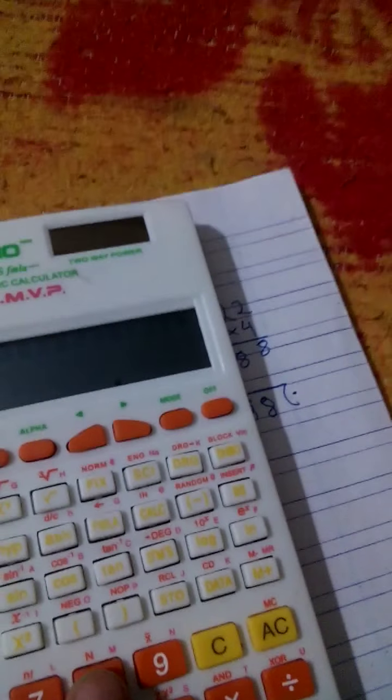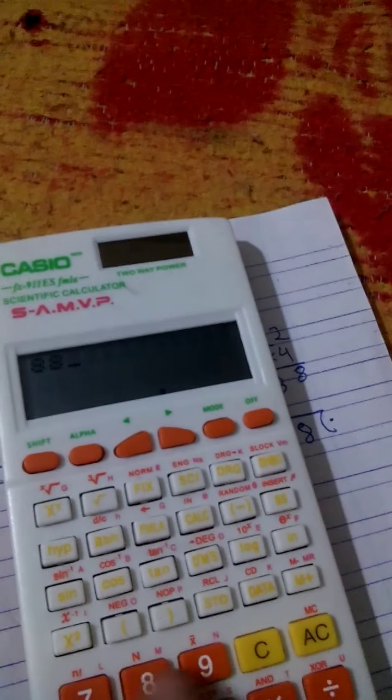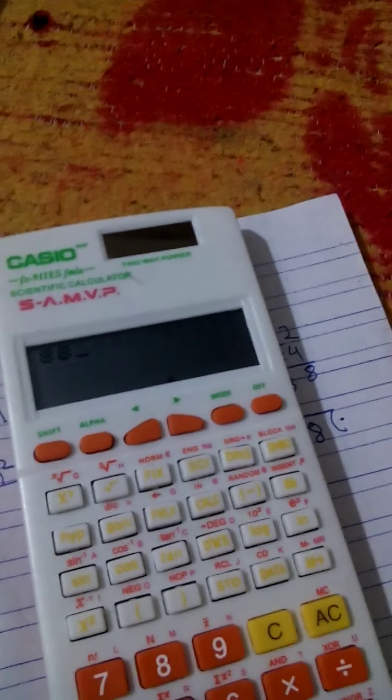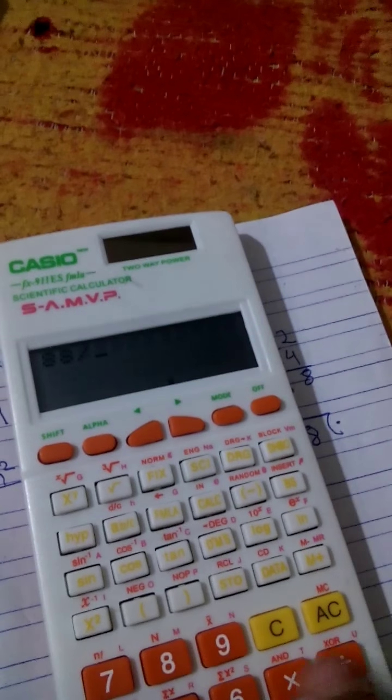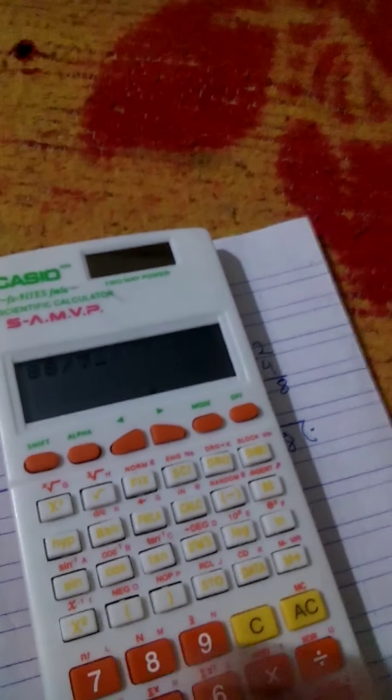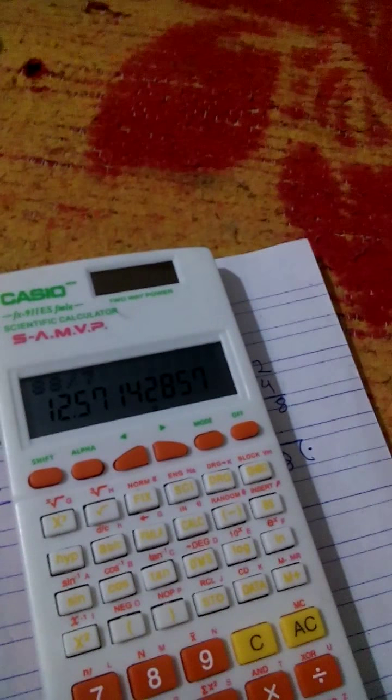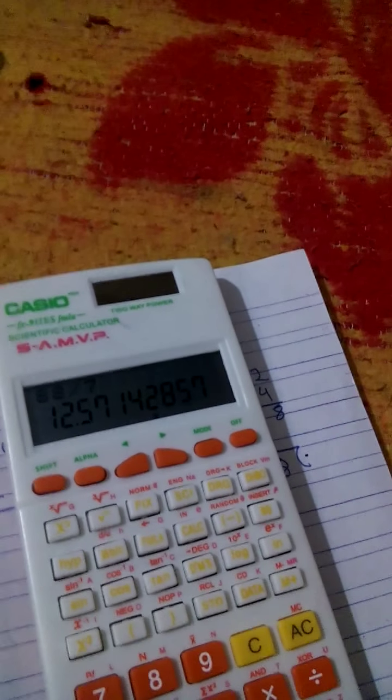Now we have to find 88 cm square by 7. We can't write Cm square in calculator. So we are writing 88. 88. 88 divided by 7. Now answer is 12.57.